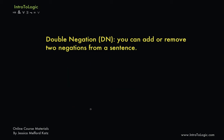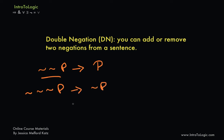We can write out all the ways to use double negation. Double negation allows us to go from not-not-P to P. If we have not-not-not-P, we can go to not-P — we've removed two negation signs in both cases. If I have P, I can add two negation signs and end up with not-not-P. And if I have not-P, I can add two negation signs and end with not-not-not-P. These are all the general forms of how we will see and use double negation.